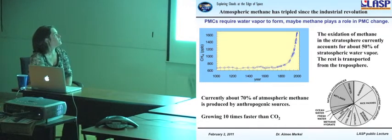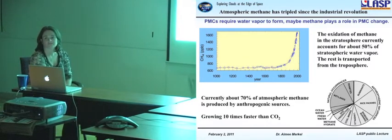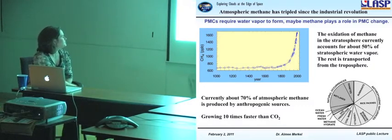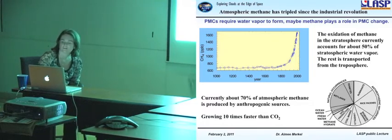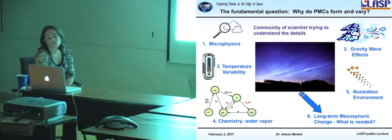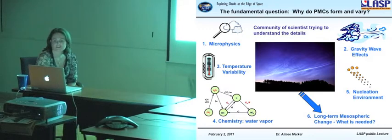So since 1860, CO2 has increased by 25%. PMCs require very cool temperatures. And CO2 plays a role in this because while CO2 at the lower atmosphere causes warming, increases in CO2 in the upper atmosphere causes cooling to space, which makes it even colder, which would then increase the frequency of clouds. Also atmospheric methane has tripled since the industrial revolution. So methane can play a role in the PMC change. Oxidation of methane in the stratosphere accounts for 50% of the stratospheric water vapor, and then the rest is transferred from the troposphere. 70% of the atmospheric methane is produced by anthropogenic sources. But if you look at this pie chart, wetlands also create a lot of methane in our atmosphere. So with CO2 increasing, it's going to provide more water for these PMCs to form.